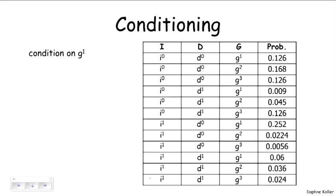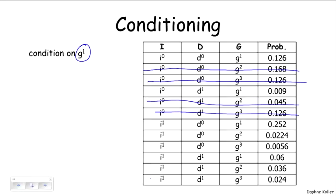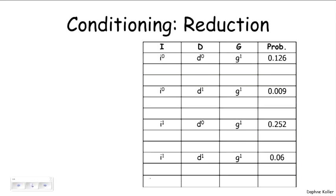What are things that we can do with probability distributions? One important thing that we can do is condition the probability distribution on a particular observation. For example, assume that we observe that the student got an A. And so we have now an assignment to the variable G, which is G1. And that immediately eliminates all possible assignments that are not consistent with my observations, so everything but the G1 observations. And so that gives me a reduced probability distribution. This is an operation that's called reduction. I've taken the probability distribution and reduced away stuff that is not consistent with what I observed.